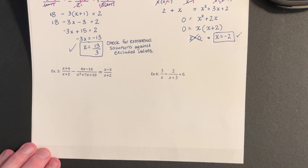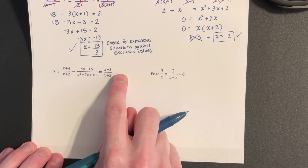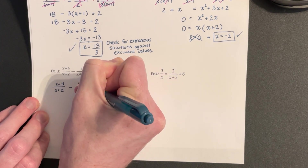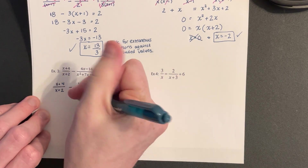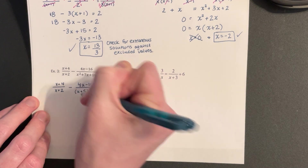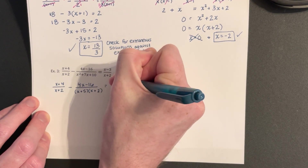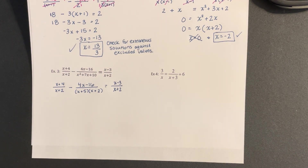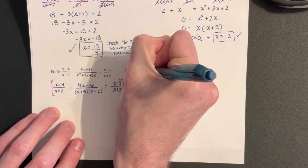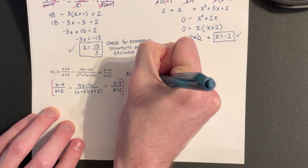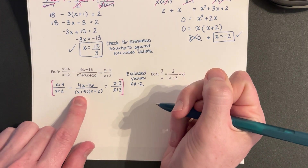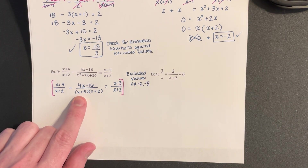Number 3. There's a little bit more to factor, but remember we're only factoring the denominators. I have X plus 4 over X plus 2, minus 4X minus 16 over a denominator that factors — X squared came from X times X, and factors of 10 are 5 and 2, which add to 7, so that factors to X plus 5 times X plus 2. The right side equals X minus 3 over X plus 2. Looking at all the denominators, the excluded values are: from X plus 2, X cannot equal negative 2; from X plus 5, X cannot equal negative 5.